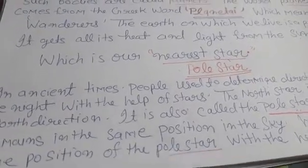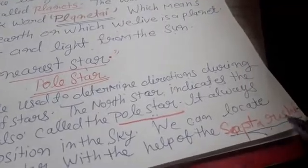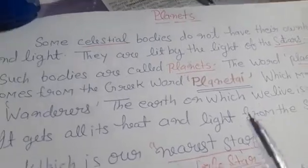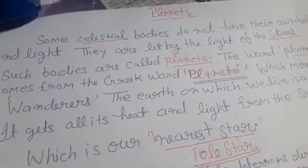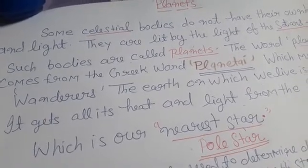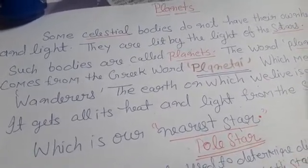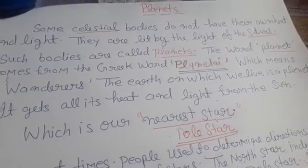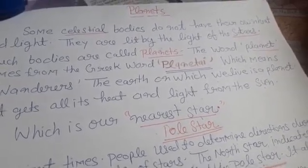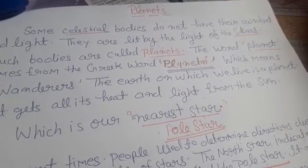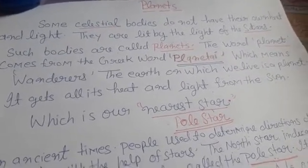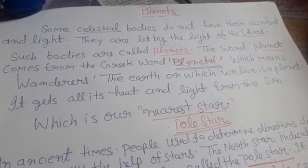Pole star की जो position है, वो हम पता लगा सकते हैं Sapt Rishi की सहायता से. तो इस वीडियो को हम यही समाप्त करते हैं. You can easily define the planet and pole star. Planet वो होता है जिसमें अपनी light और heat नहीं होती. वो stars की light से ही चमकते हैं. ऐसी bodies को हम planets बोलते हैं. समझ में आ गया होगा. तो इस वीडियो को मैं यही समाप्त करती हूँ. और तब तक के लिए आप घर में रहिए, stay in home, और safe रहिए और हमेशा सकारात्मक रहिए. सकारात्मक सोच से ही हम इस critical position को हरा सकते हैं. Be positive, think positive. God bless.